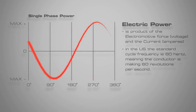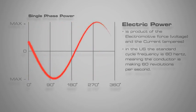In the United States, the standard cycle frequency is 60 hertz. This means that the conductor is making 60 revolutions per second.